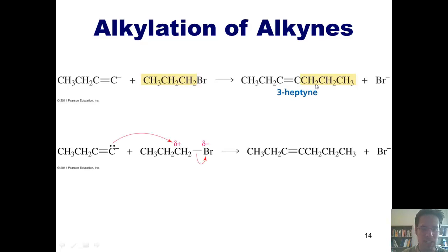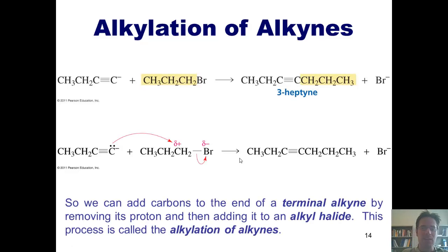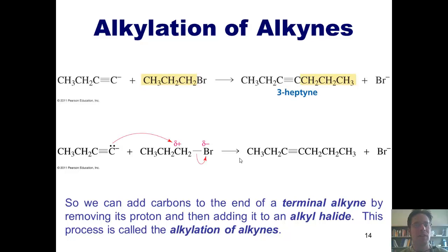Here's the mechanism: the lone pair electrons on the SP hybridized carbon — left over when that carbon's hydrogen was removed — come in and attack the carbon of the alkyl halide. This forms a bond between the alkyne carbon and that carbon, while the two electrons shared between that carbon and the bromine get pushed into the bromine, releasing it as free bromide. This extends the length of the alkyne. This process is called the alkylation of alkynes.